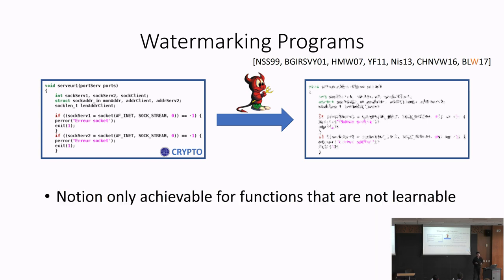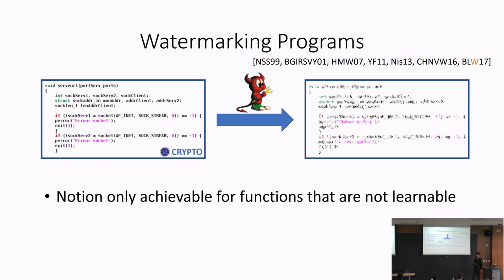Having defined the notion of watermarking for software, the natural next question is: what kinds of functionalities or circuits can we hope to watermark? Very quickly, we see that many classes of circuits cannot be watermarked under these definitions.